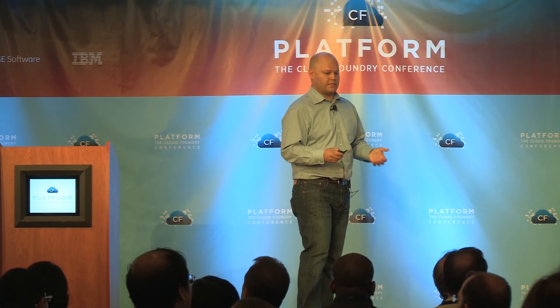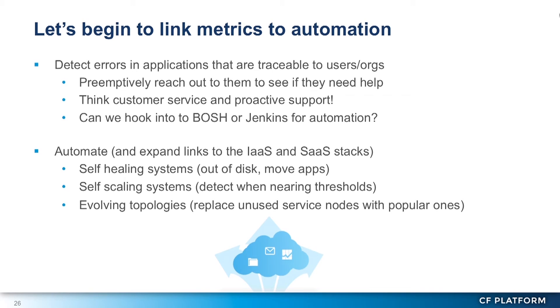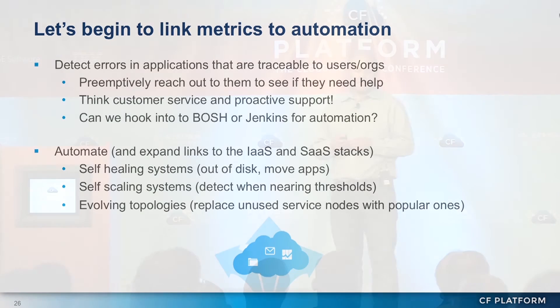Going forward, we've got great stuff in there, but we want to resolve gaps between what we're looking at in NG and classic. We'd like to get that same data from the old system into the new — my colleague Doug Davis actually put in an issue against the cloud controller in NG to explore that. We'd also like to link the metrics we're statically looking at into any sort of automation — auto-solving, scaling, and things like that. Another idea from Bala on our team is to preemptively help users that are seeing problems by looking at the logs and the health of their app. All this in the hope to heal the system, scale, and let it evolve as we understand usage patterns.